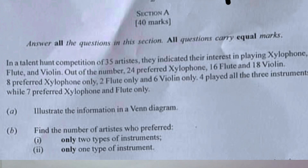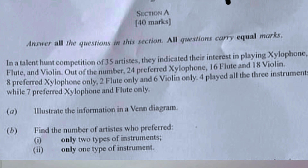Question 1 — let's read the question together. In a talent show competition of 35 artists, they indicated their interest in playing xylophone, flute, and violin. Out of their number, 24 preferred xylophone, 16 flute, and 18 violin. 8 preferred xylophone only, 2 flute only, and 6 violin only. 4 played all 3 instruments, while 7 preferred xylophone and flute only. Illustrate the information in a Venn diagram. Find the number of artists who preferred: (i) only 2 types of instruments, (ii) only 1 type of instruments.